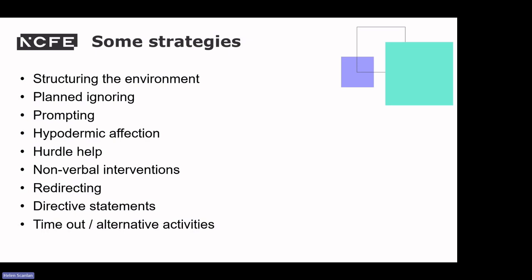There are additional strategies teachers can use, such as peer support, differentiated activities, grouping learners appropriately, and allowing an element of control in the work and activities learners complete. From the chat: working closely with parents and other professionals involved with the learner, sharing information, collaborating on strategies and maintaining open communication channels to ensure consistency. Also: anticipating and preventing challenging behaviours by identifying triggers and implementing strategies to minimise them before they arise.